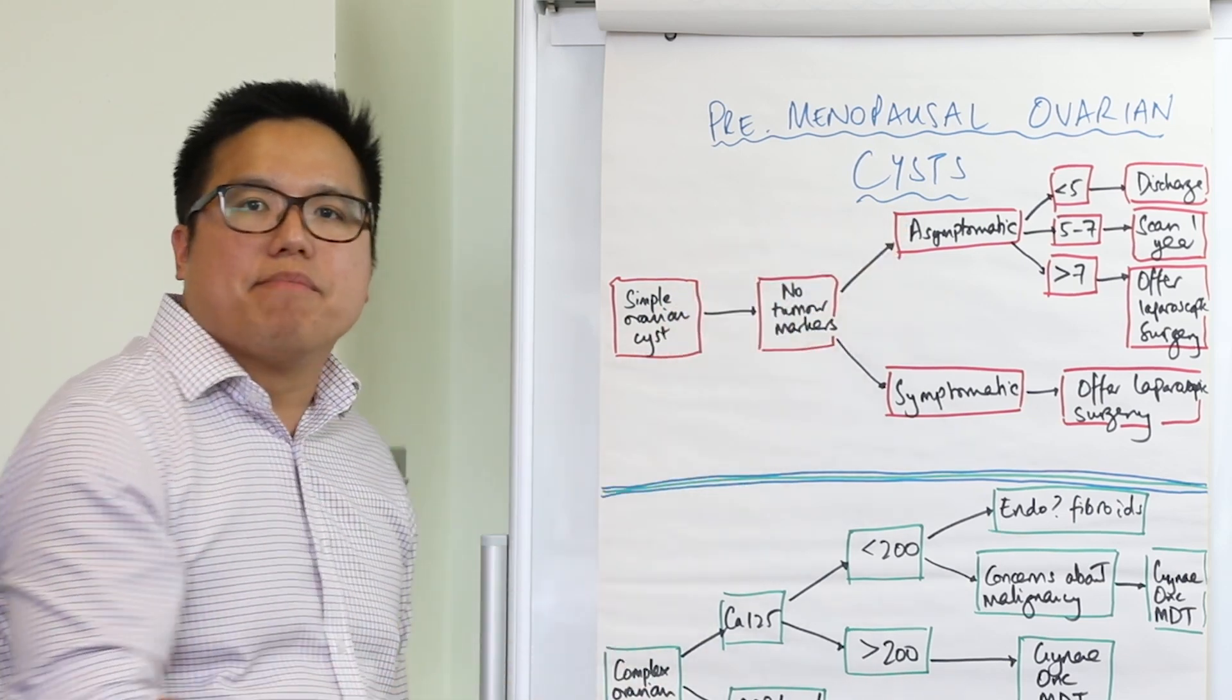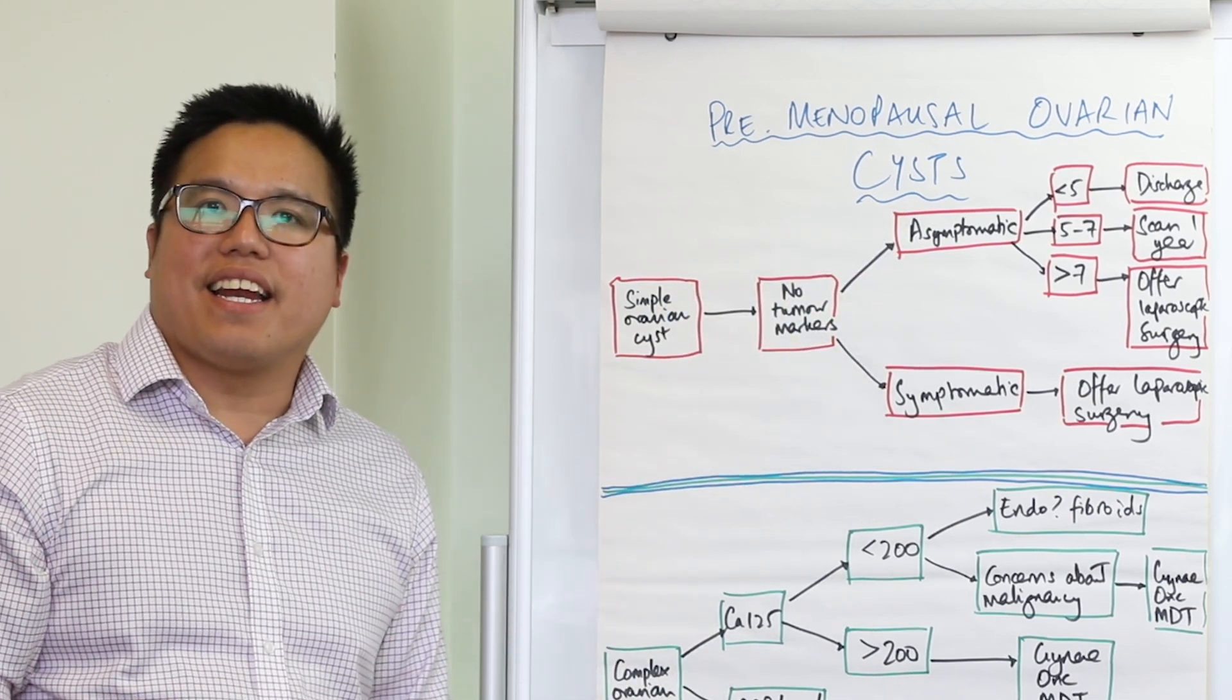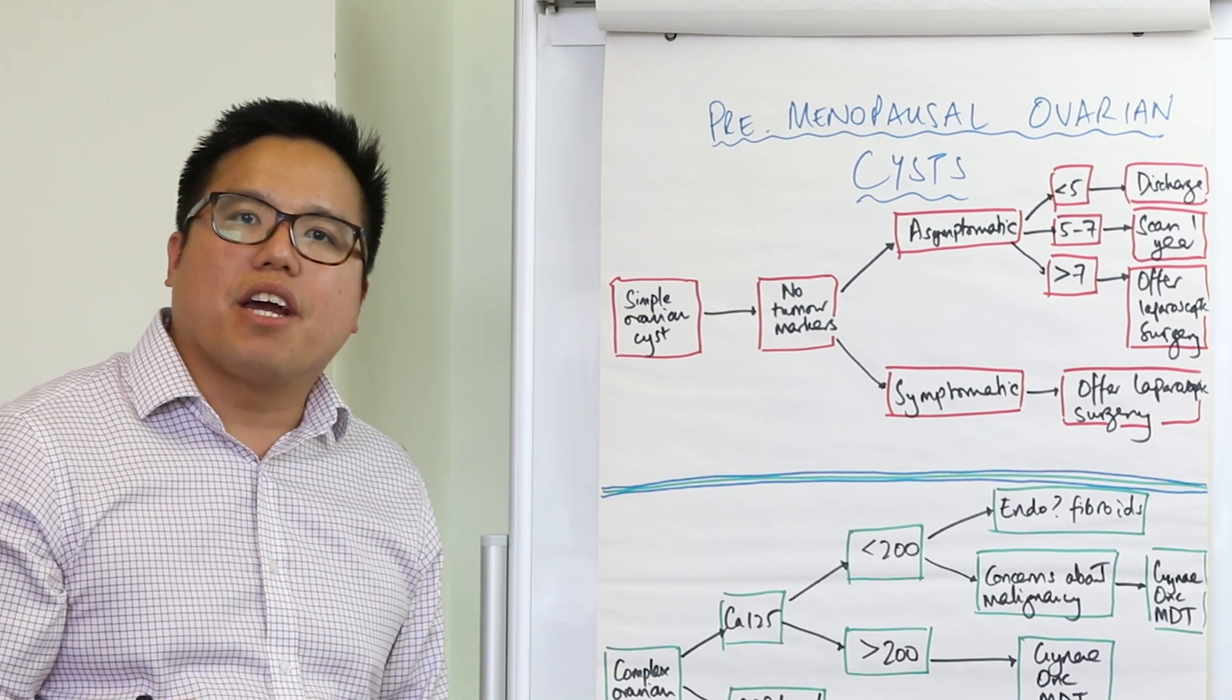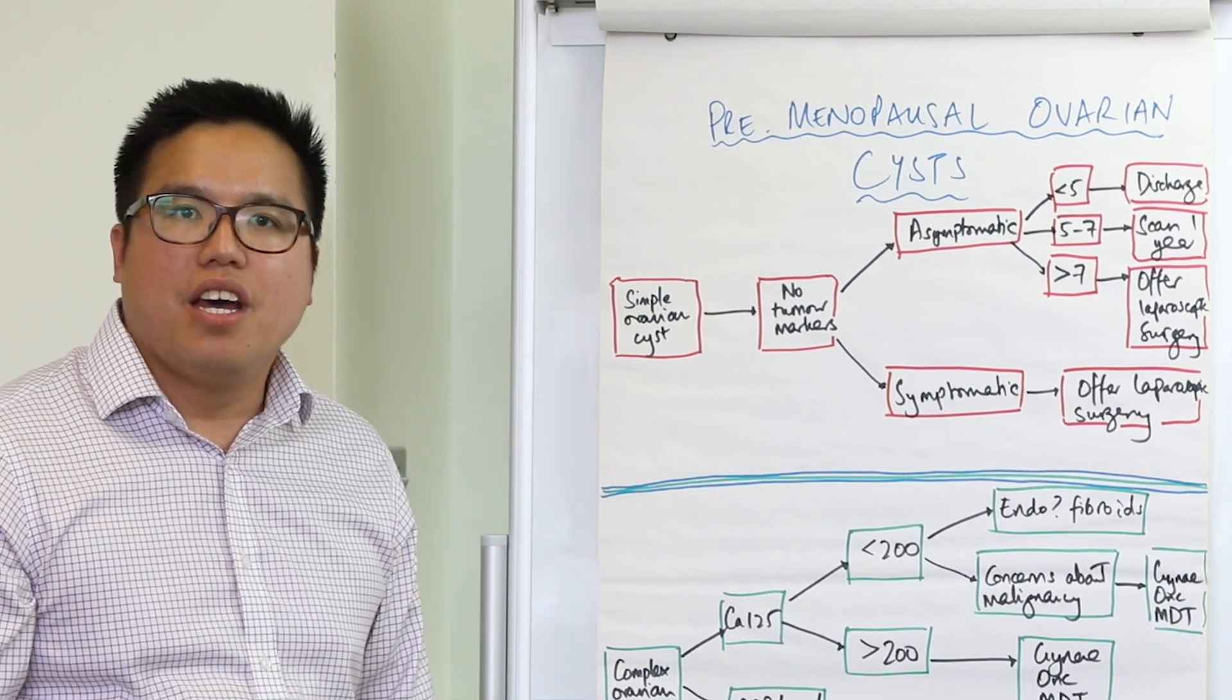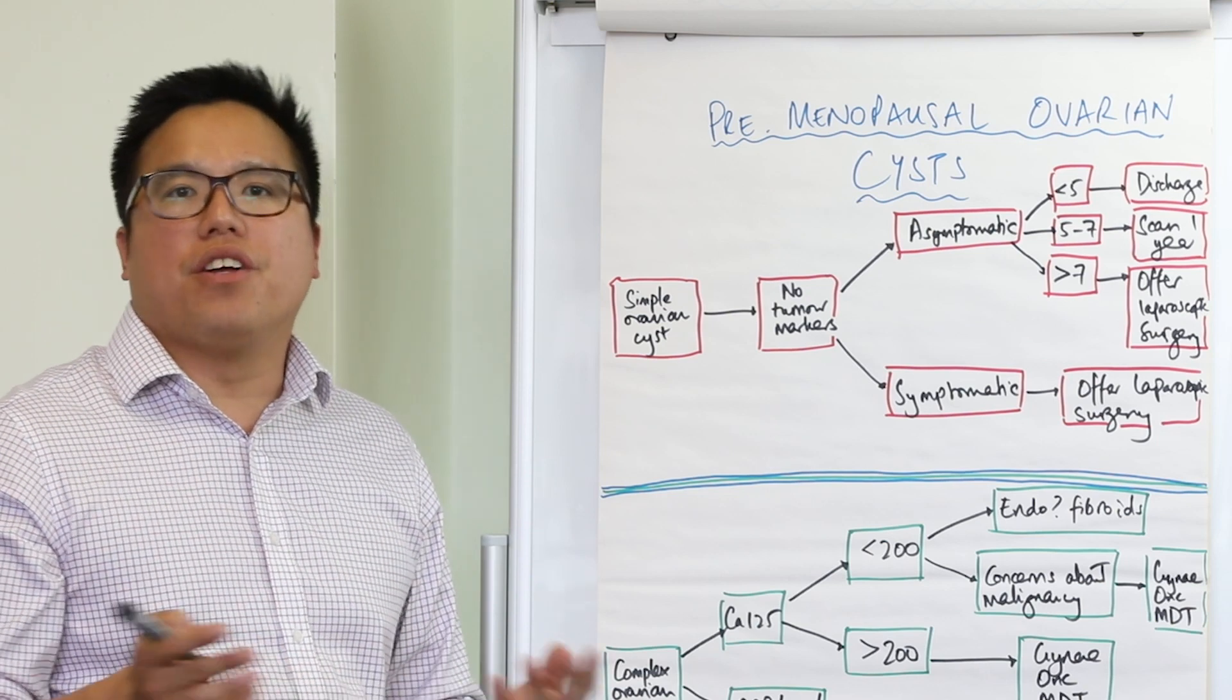For those that are asymptomatic, you still need to clinically assess them, but the management is going to be based on the size of the cyst, and we group these women into a further three categories.